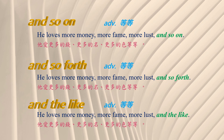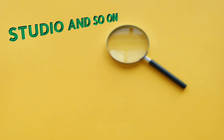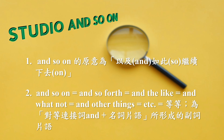您有没有发现到'and so on,' 'and so forth,' 'and the like' 好像用法意义都一模一样？Studio: 'and so on.' And so on的原意为以及如此继续下去。And so on等于and so forth，等于and the like，等于and what not，等于and other things，等于etc. 注意：etc.不要念成etc，它是拉丁文，要念成etc. 这些片语全部都表示等等的意思。